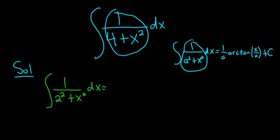All right, now we can apply the formula. So it's 1 over a, so our a is 2, so it's 1 over 2, arctangent.